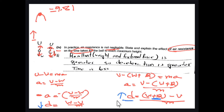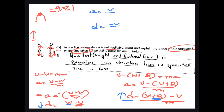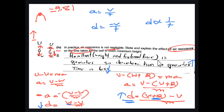For case 2 deceleration is greater; for case 1 deceleration is less. Since deceleration is inversely proportional to time (deceleration = velocity/time), greater deceleration means less time. So for case 2 the time taken to reach maximum height is less, because the resultant downward force — weight plus frictional/air resistance force — is greater.